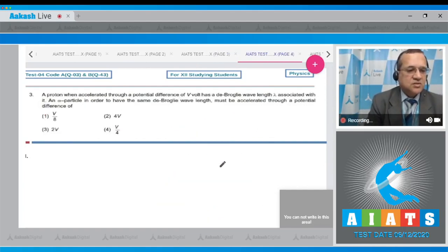Let's start with the third question: A proton when accelerated through a potential difference of V volt has de Broglie wavelength lambda associated with it. An alpha particle, in order to have the same de Broglie wavelength, must be accelerated through the potential difference of? The wavelength relation is lambda equals H upon square root of 2Mq times V if the potential is given to you.